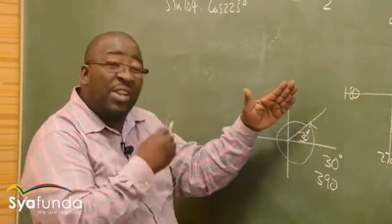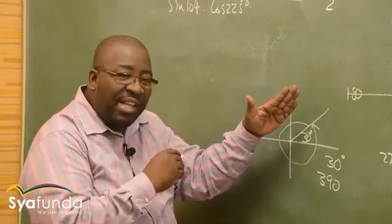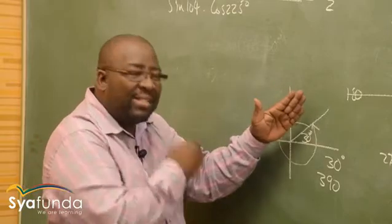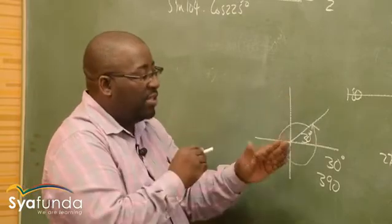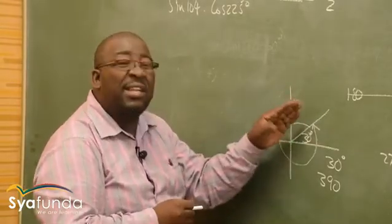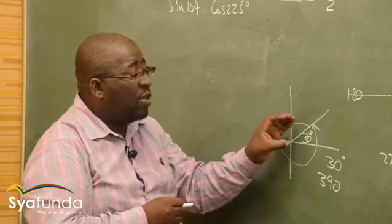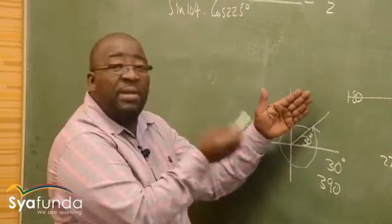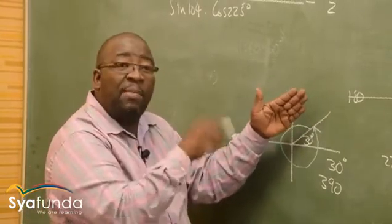That is what we call a general solution. Generally, there are so many other angles. But specifically, this angle is 30 degrees — that is the special solution. A special solution will be 30 degrees.